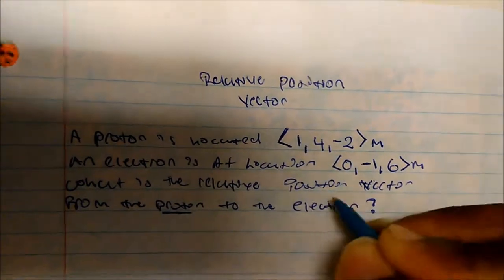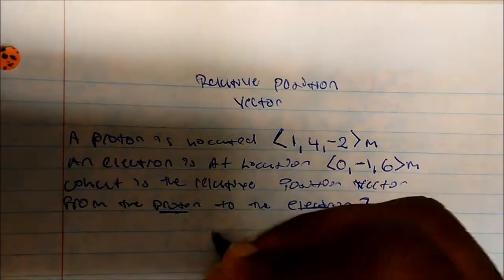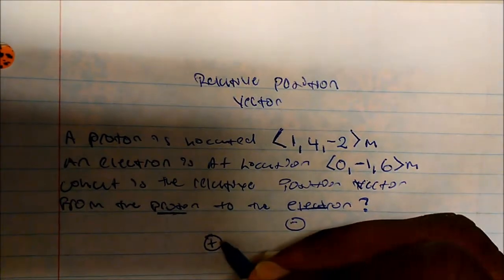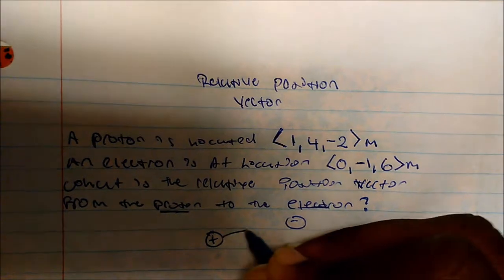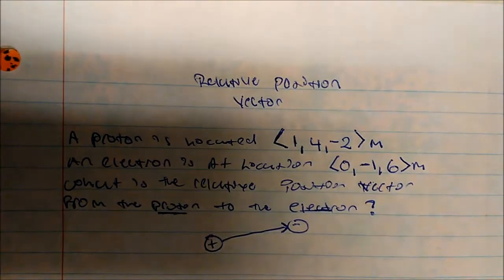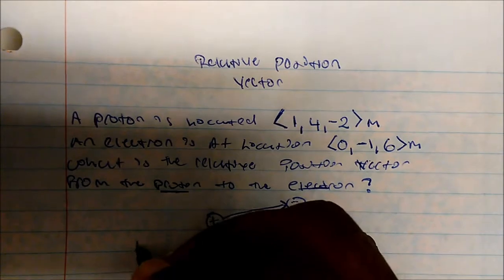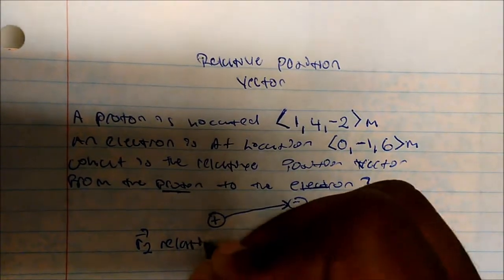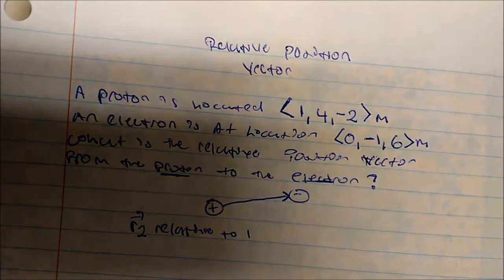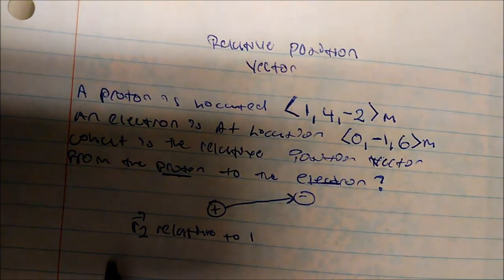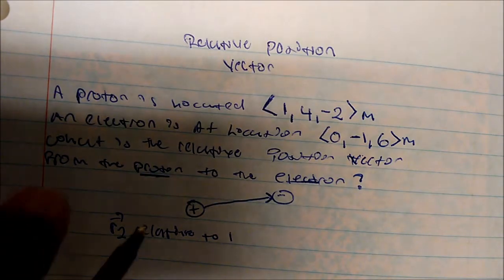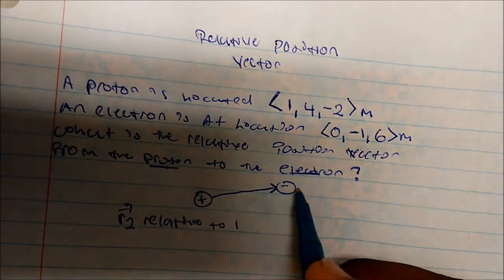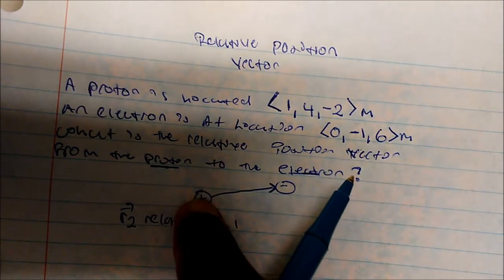So from the proton to the electron. You can imagine I have my proton here and I have my electron here. So what is the relative position vector starting from the proton to the electron? So remember we define a relative position vector as R2 relative to 1. So it's a second position relative to the first.